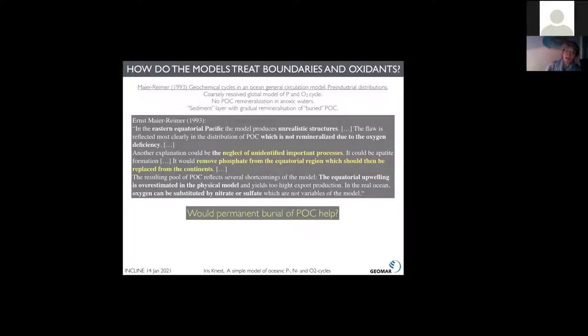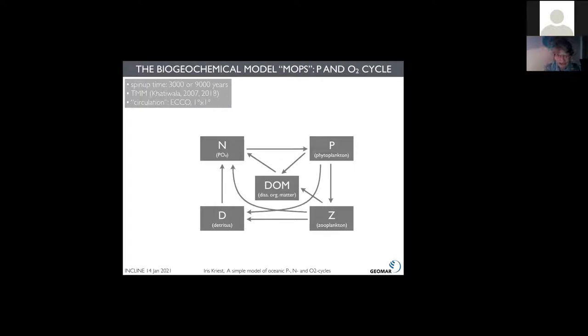Let's first have a look at the removal of phosphate and its replacement from the site. That led me to the question: would the permanent burial of POC help to improve those models? In order to investigate this almost 20 years later, I developed this MOPS model, and Rafaela already told you how it works. It's very simple, based on phosphorus, contains nutrient phytoplankton, zooplankton detritus and dissolved organic matter. I used it in the TMM and the transport matrix methods. All the following runs are based on the circulation or the transport matrices of the ECHO model on one by one degree grid. The spin-up time was either 3000 or 9000 years.